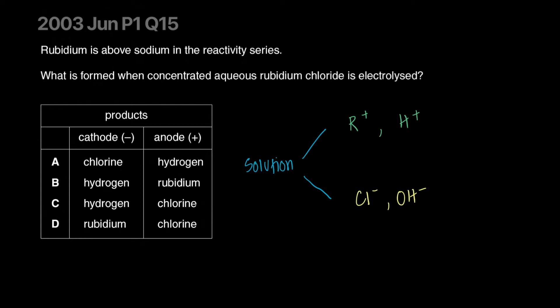At the cathode, the positive ion will discharge because cathodes give out electrons. Which of these two will discharge? Rubidium is above sodium, so it's placed in the reactivity series and hydrogen is way near the bottom. In the metal reactivity series, it's the lower of the ions that'll discharge. That's how electrolysis works. Hydrogen will discharge and form hydrogen gas at the cathode.